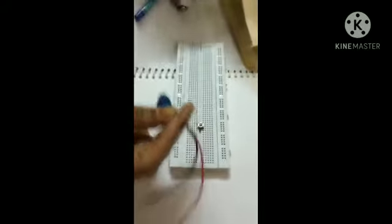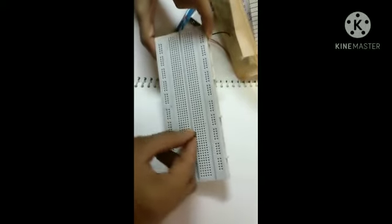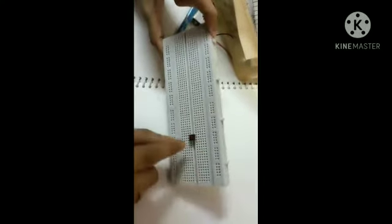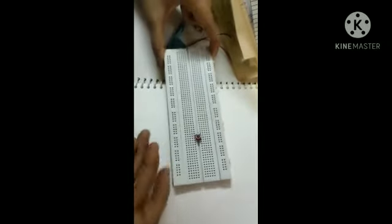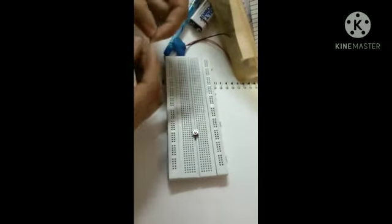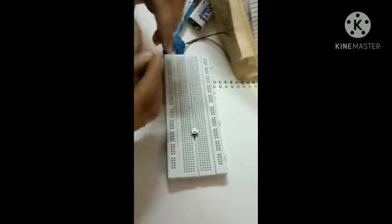To start, first we have to insert the push button like this in the breadboard. Two legs are inserted downward and two legs are upward. Second step, you have to insert the resistor.